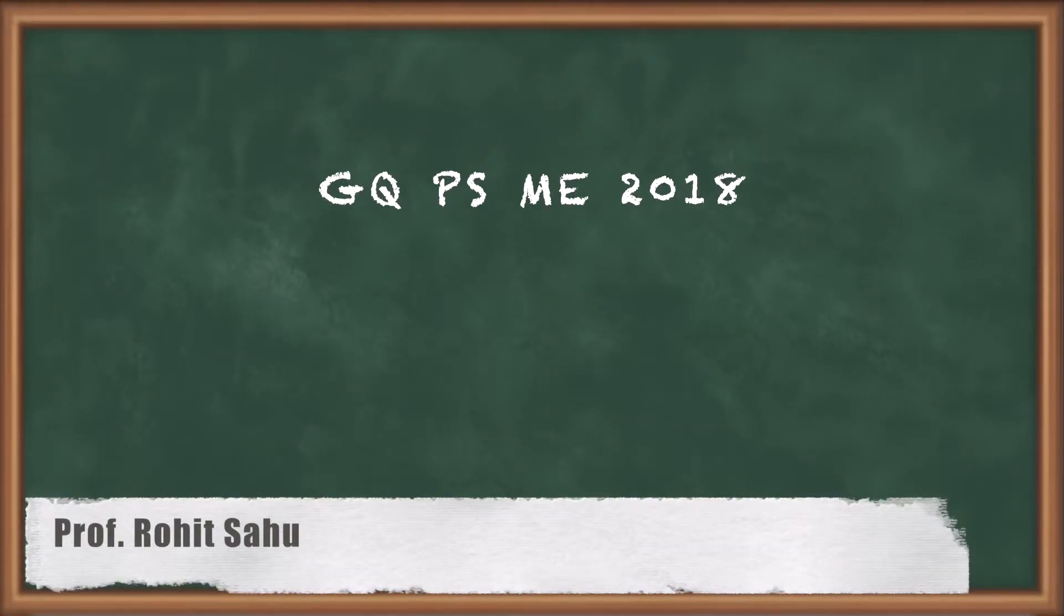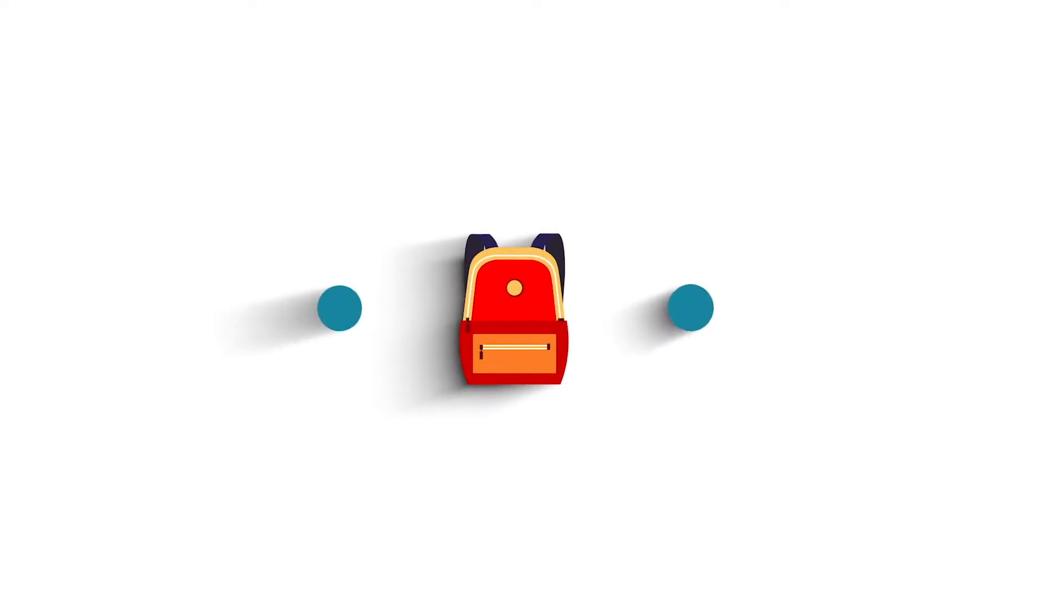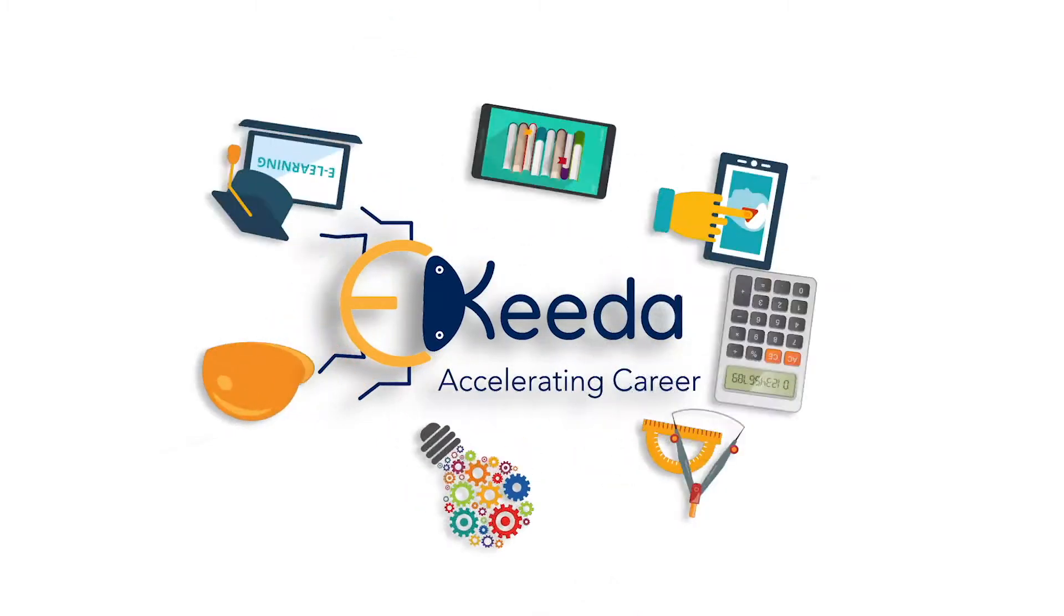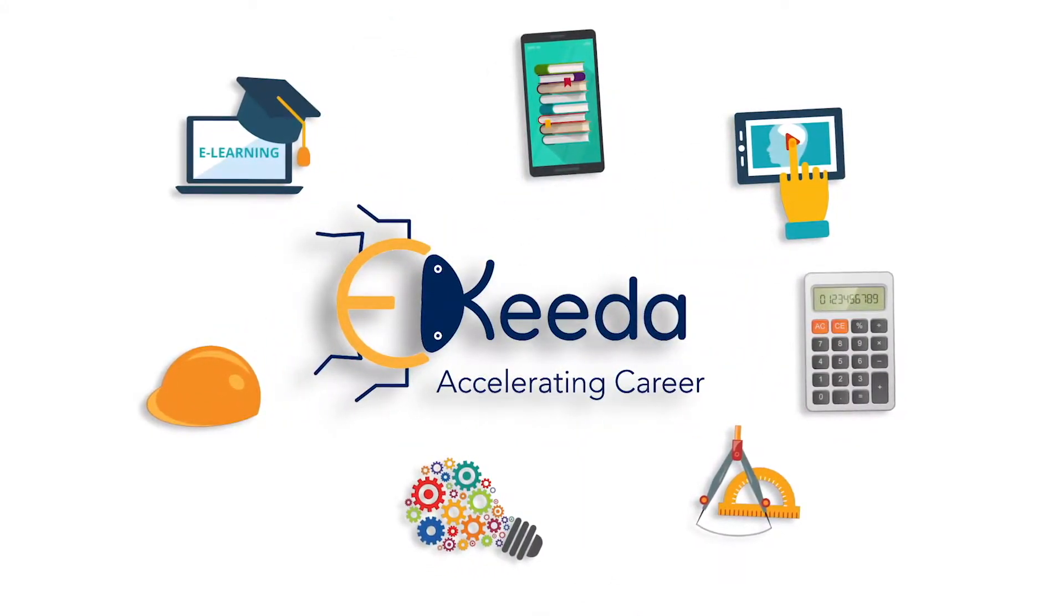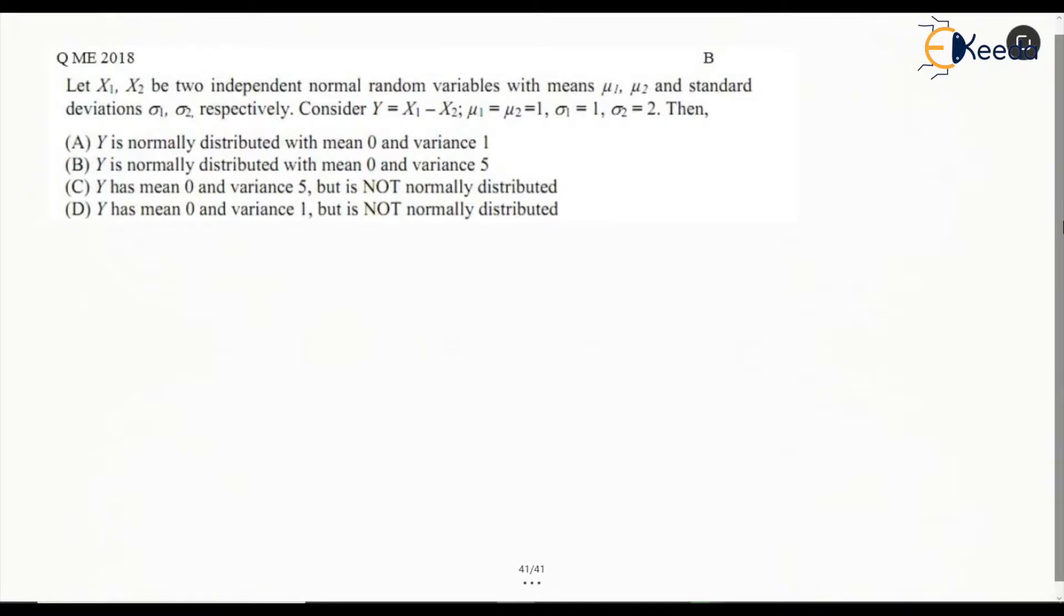Hello everyone. In this session, we will see a question from probability distribution mechanical 2018. You can see that this is on the normal random variable.